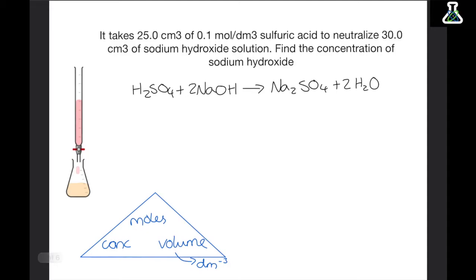Now we looked at titrations back in the unit chemical changes, but now for the separates content we need to take it a bit further. We need to look at titration calculations. Let's look at a question. It takes 25 cm3 of 0.1 moles per decimetre cubed sulphuric acid to neutralize 30 cm3 of sodium hydroxide solution. Find the concentration of the sodium hydroxide.